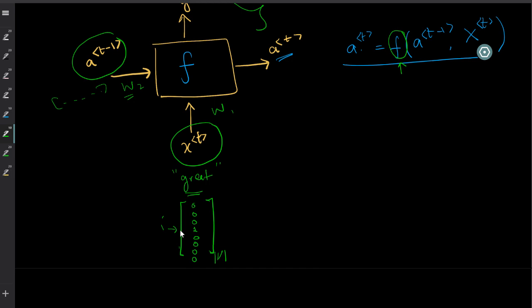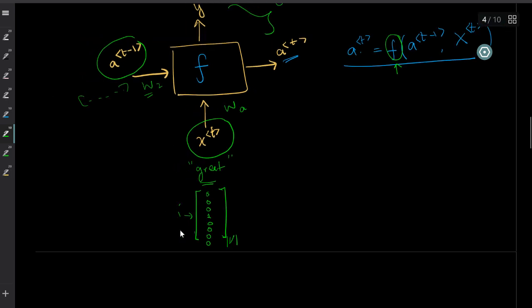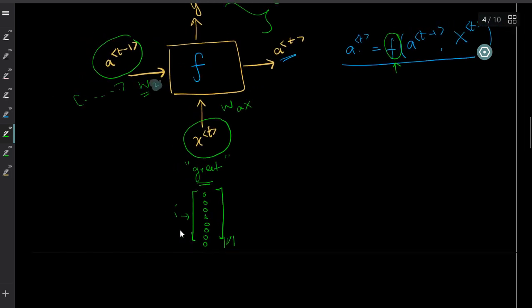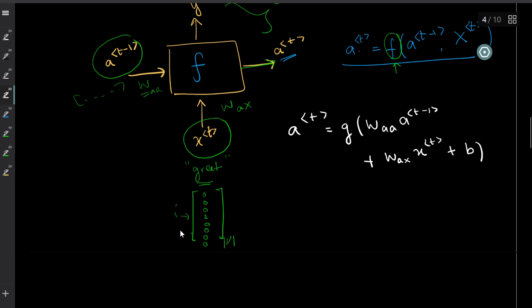We have two different weight matrices: one for your input features and one for your activations, so you can combine both. Let's denote the input weight matrix as W_ax and the activation weight matrix as W_aa. You can now write: a(t) = g( W_aa · a(t-1) + W_ax · x(t) + bias ), where g is some nonlinear function like ReLU or tanh.